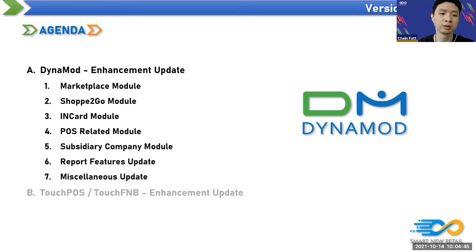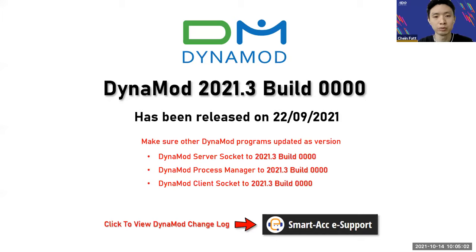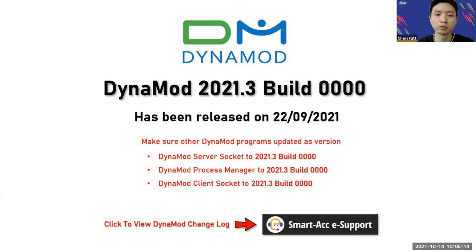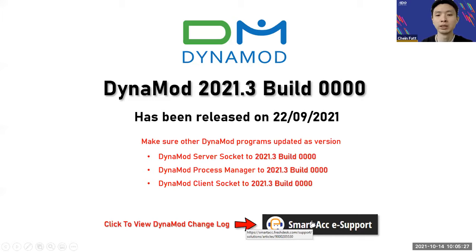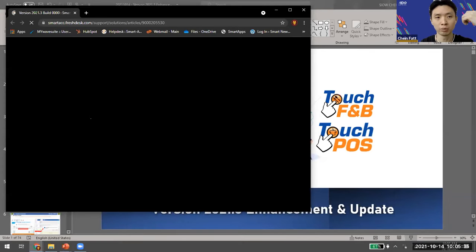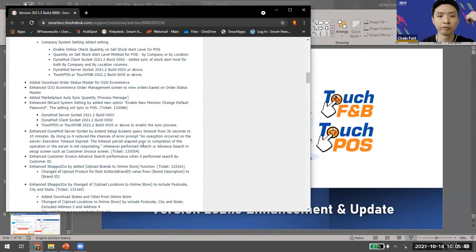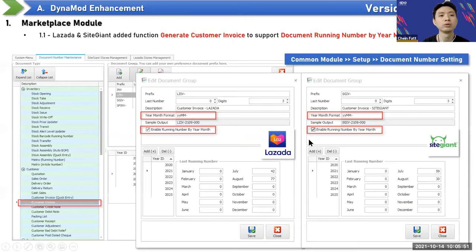The report features today will take a bit of time. Before you update the version to 2021.3, you have to take note: you must also update the server socket, process manager, and client socket. This was already released last month. If you get this slide, you can click the link to go directly to the enhancement listing, which includes more enhancements and some fixes.